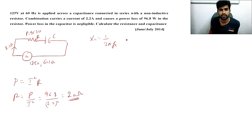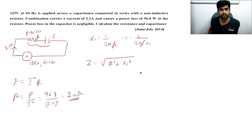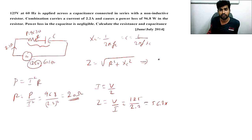Now to calculate C, we use Xc = 1 / (2πfC), so C = 1 / (2πf·Xc). We need to calculate Z first, since Z = √(R² + Xc²). Z = V / I = 125 / 2.2 = 56.81 ohms.